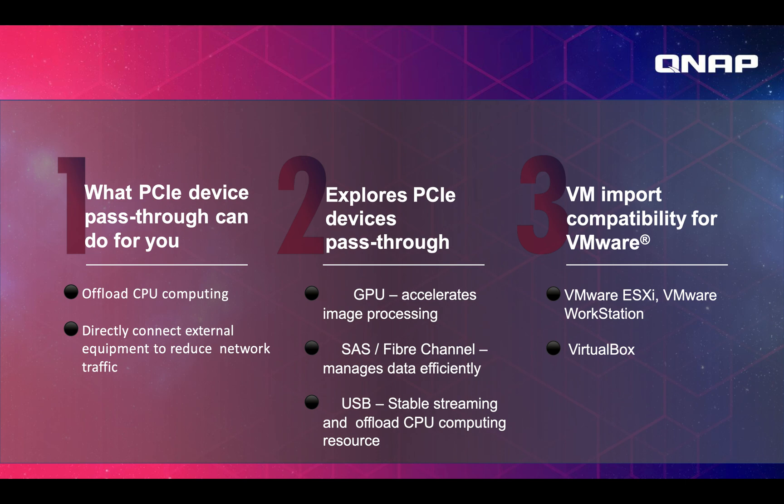What PCIe Pass-Through can do for you: it can allow you to offload CPU computing, and directly connect to external equipment to reduce network traffic. For example, you could connect a GPU for rendering or image processing. You could connect a SAS or Fiber Channel card to connect to other storage devices without needing to use your network. You could connect a USB stable streaming device to have a more stable stream with fewer issues.